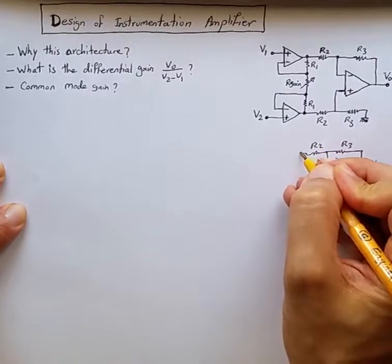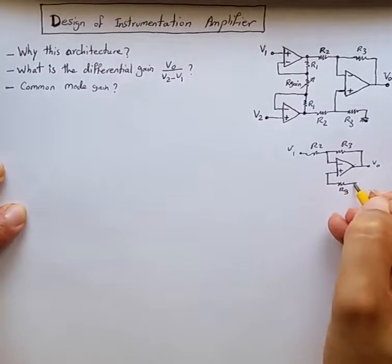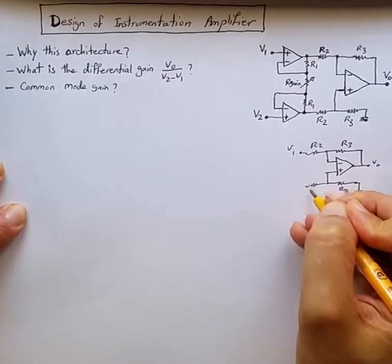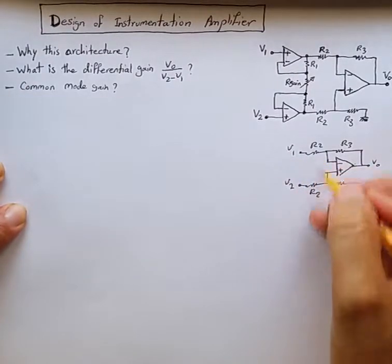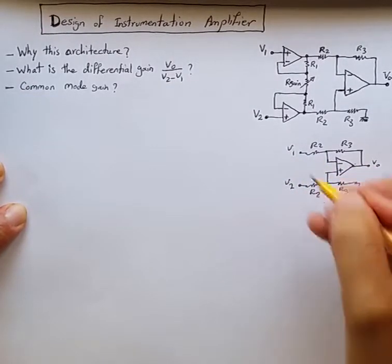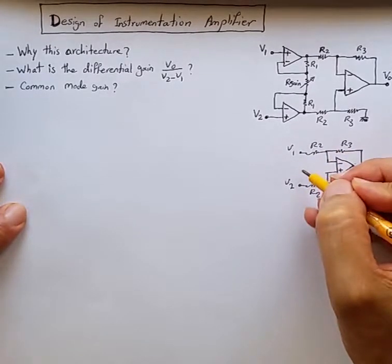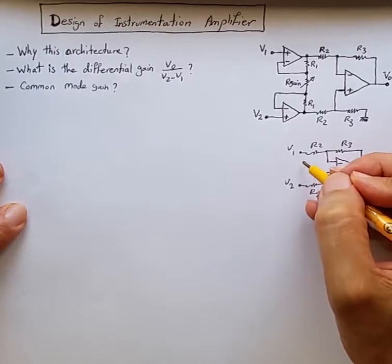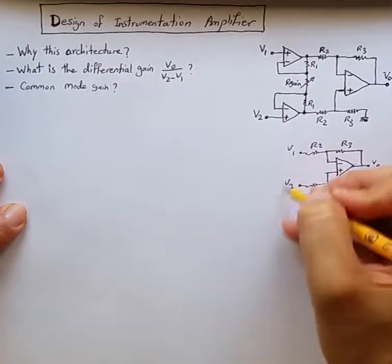It can be done this way but there are problems including the fact that we are directly connecting V1 and V2 to these resistors. V1 and V2 could be two voltage sources coming from two sensitive sensors that are not able to provide current to the circuit, so they are not buffered.